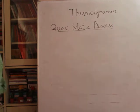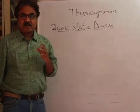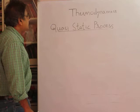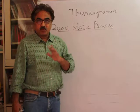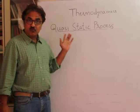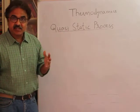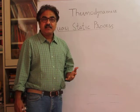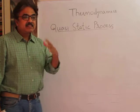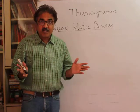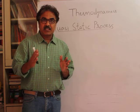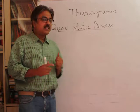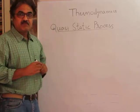Hello students, welcome back. Now we are going to understand a process which is called as quasi-static process. Quasi means almost, static means stationary. So what is this almost stationary thing? It means it's a process, so there has to be movement. If there is a physical object associated with it, there has to be movement, the properties have to change. But then it has to be almost static. Let's understand what we mean by that.